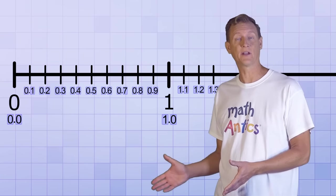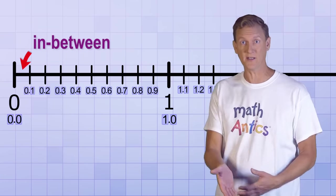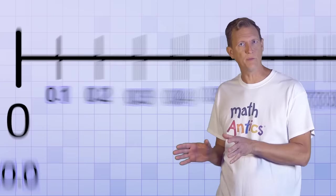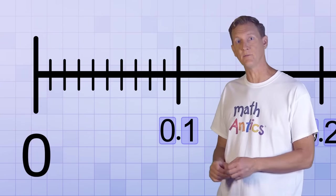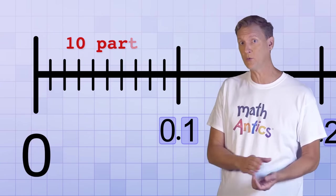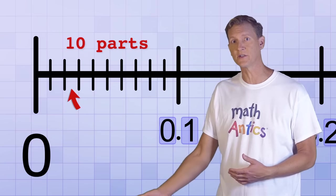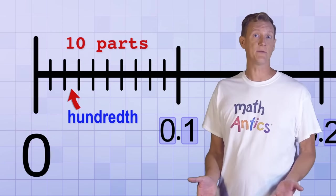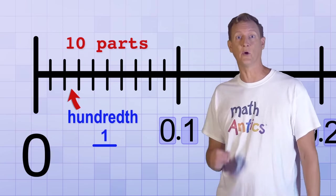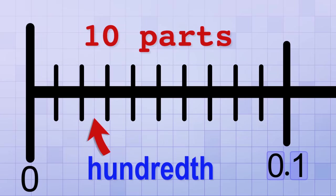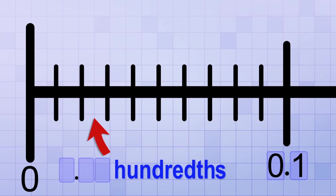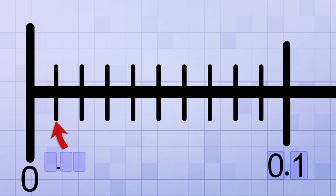But we don't have to stop there because there are numbers in between the tenths too. If we zoom in further and divide the space in between this first tenth into 10 equal parts, each of those new smaller fractions is called a hundredth because it's the amount you'd get if you divided 1 into 100 equal parts. Again, remember that we have a number place for counting hundredths immediately to the right of the tenths place. So this first mark would be 0.01 because it's 1 hundredth, and this next would be 0.02 because it's 2 hundredths.